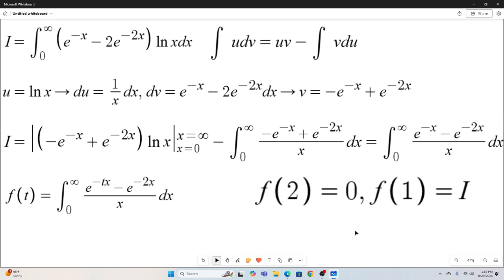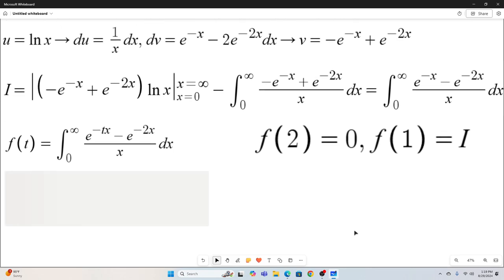All right. So the next step is we use the Leibniz rule for differentiation under the integral sign, which says we can take the derivative. Oh, I'm sorry, I put an f1 of t, that's an f prime of t, just so you know. We know that f prime of t using the Leibniz rule is equal to this integral right here, except we just take the partial with respect to t of the integrand. And if you do that, this is the integral you end up with. And that easily evaluates to negative one over t.